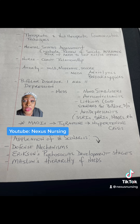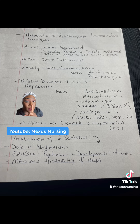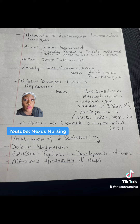Make sure you know your antidepressants, such as your SSRIs, your SNRIs, your MAOIs, etc. SSRIs are the number one choice for antidepressants. And make sure you know those foods that contain tyramines that patients taking MAOIs have to stay away from. You're going to see it.